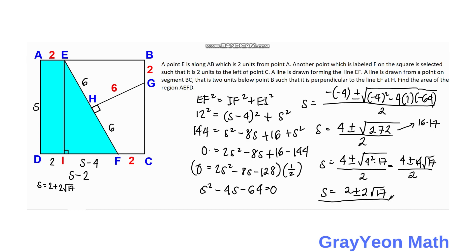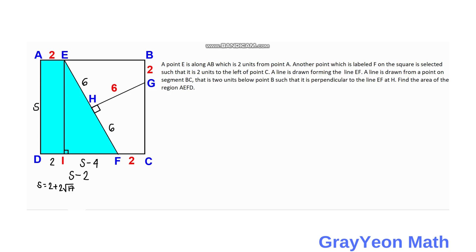We only consider S equals 2 plus 2 times the square root of 17, and not 2 minus 2 root 17, because that would result in a negative distance — so that answer is invalid. With S equal to 2 plus 2 root 17, which equals approximately 10.25 (noted as 80 in simplification), and S minus 2 equals 2 times the square root of 17, which is the length FD. We already have AE equals 2, so we are ready to find the area of region AEFD.